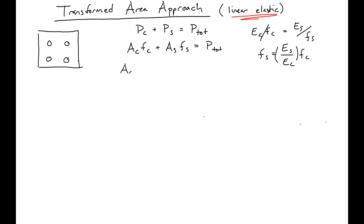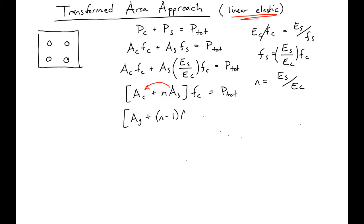Plugging this into our equation, we have AC FC plus AS times ES over EC times FC equals our P total. Factor out our FC and we'll get AC plus N times AS times FC equals our P total. We can get our gross area plus N minus 1 times AS times FC equals P total.